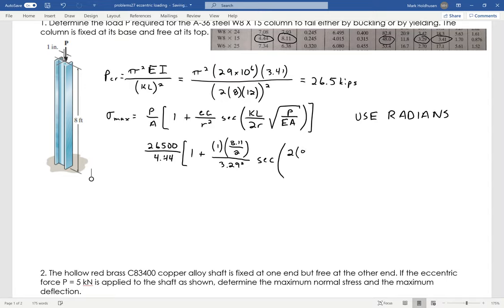So that's K, which is 2 for fixed-free, times L, which is 8 times 12. Again, I want that in inches, so I take the 8 feet times 12 inches, divided by 2 times R, which again is 3.29, just like it was before. Same axis - it's the stiffer axis that I need to use here.